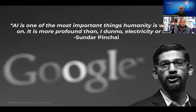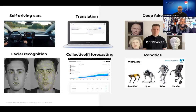I think AI is the singular most important thing for all of humanity — beyond electricity and beyond the wheel. What is it used in? Today it has formed the foundation of what will be the next 50 years of innovation — from self-driving cars, to machine translation, deep fakes, facial recognition, collectivized forecasting, to robotics. Everything that is mind-boggling today is all relying on deep learning.